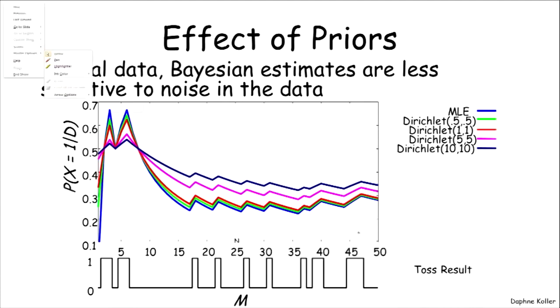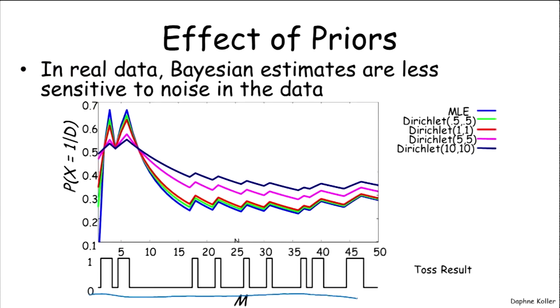So if what we have here is the actual value of the coin toss, at different points in the process, you can see that the blue line, this light blue line, that corresponds to maximum likelihood estimation, basically bops around a fair amount,